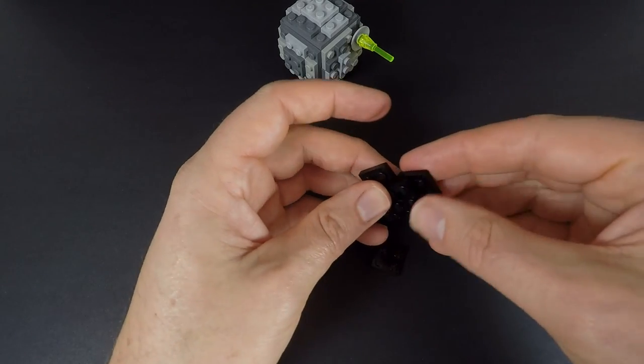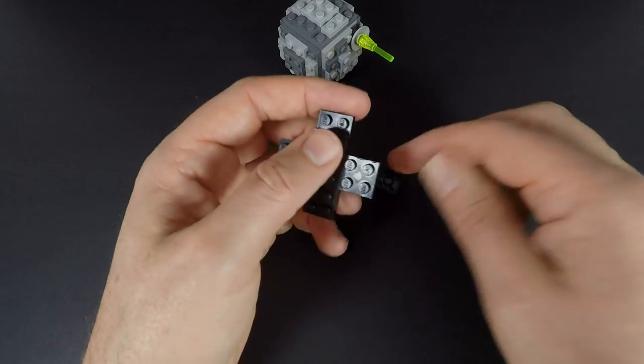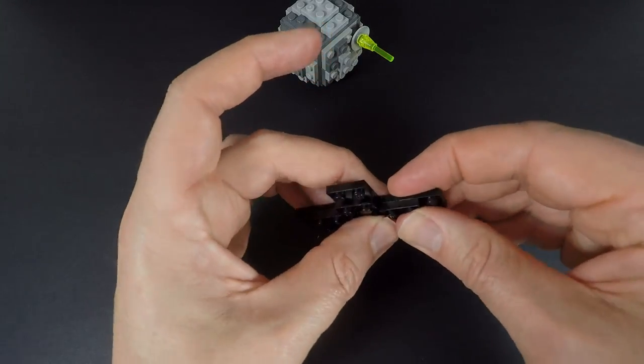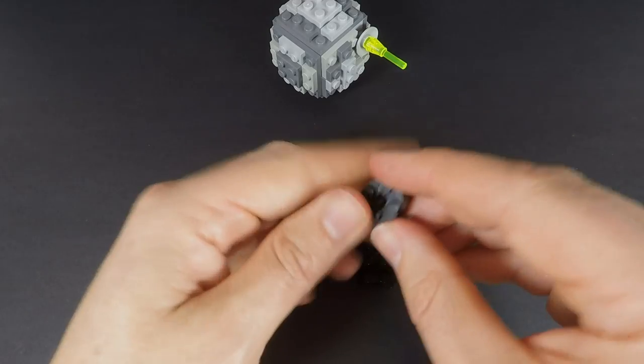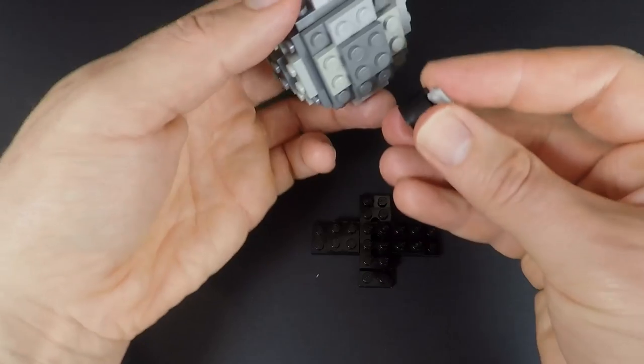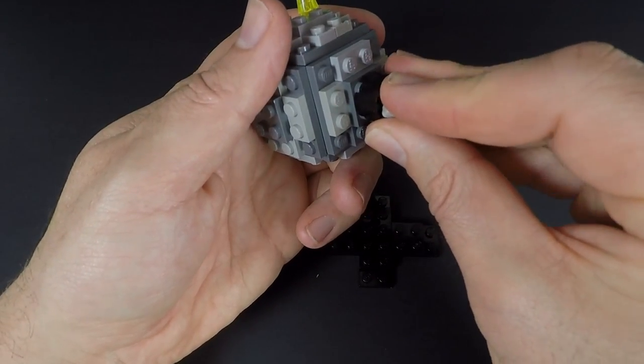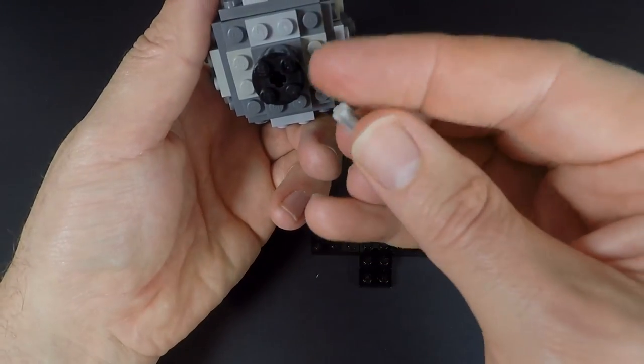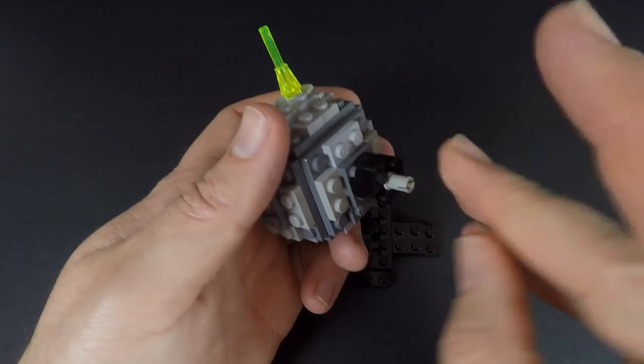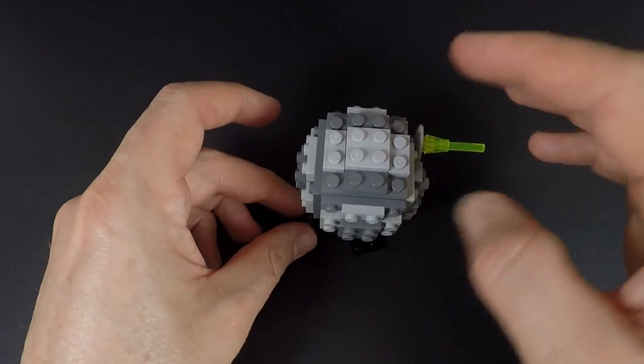We're going to put some 2x2 plates on the side like that, and another one here and here. This gives us a bit more support. For the top bit we've got to connect this to the bottom. The problem is it only connects one way, so this is where the holes come in. We can push this Technic pin in here and this now will go into our plate. And here we have our Lego Death Star.